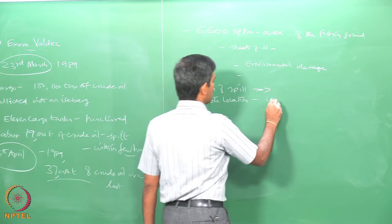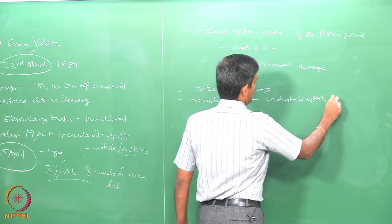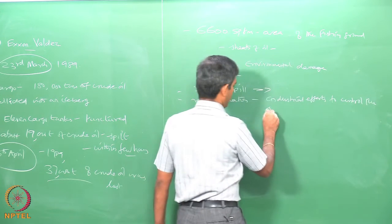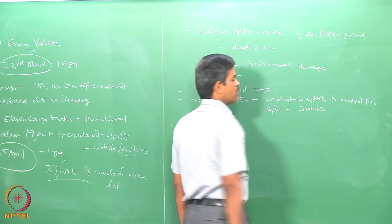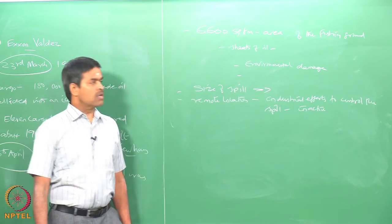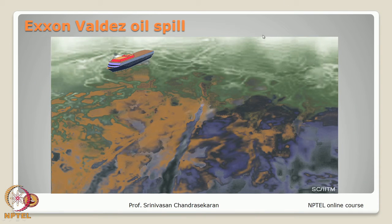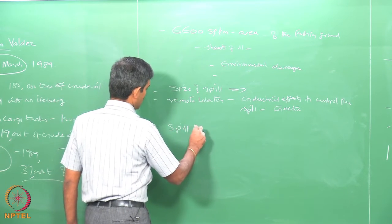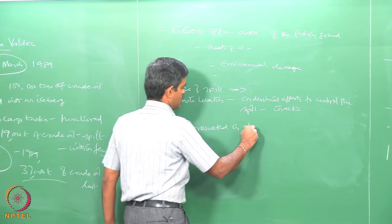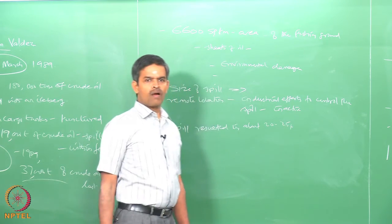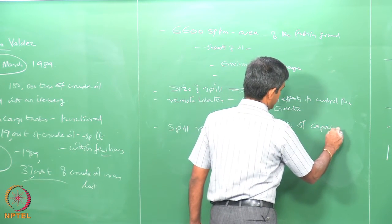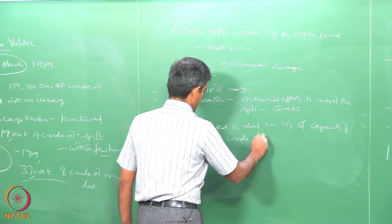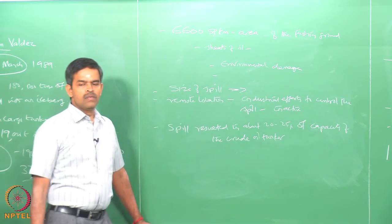The size of the spill was very very high, and it happened in a remote location. Therefore the rescue operations and industrial effort to control the spill were not very effective. Looking at the screen, you see the picture depicting the Exxon Valdez oil spill from the vessel, which caused serious pollution to a very large area affecting fisheries. The data shows that the spill resulted in about 20 to 25 percent of the tanker's capacity being lost.